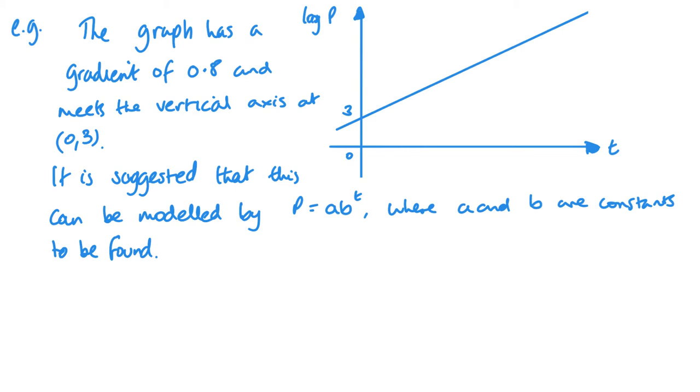So here we have a quick example. I've not done any context here just so that I can fit everything on, and you can see that we've got log P plotted against t. It tells me the gradient and it tells me where it hits the vertical axis. Now from this, what I'm going to do is a few things. So the first thing I'm going to do is write down the equation of this straight line. So if I think about it, it's going to be y, which is my log P, equals mx, so that's 0.8t, plus c, and my c is 3. And that there is the equation of this straight line.